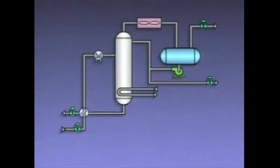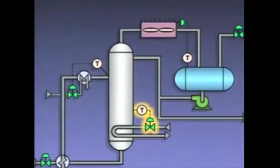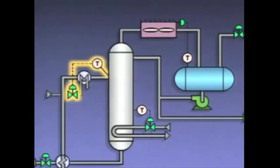Each control loop consists of instruments and devices that work together to monitor and control the value of a process variable. In our example, the primary energy flows are controlled by a reboiler temperature control loop, a feed preheater temperature control loop, and a condenser temperature control loop. The reboiler temperature control loop controls the amount of heat that is sent to the tower, accomplished by regulating the flow of steam through the reboiler. The feed preheater temperature control loop controls the temperature of the feed by regulating the flow of steam through the preheater.